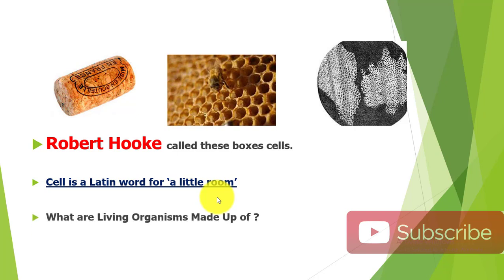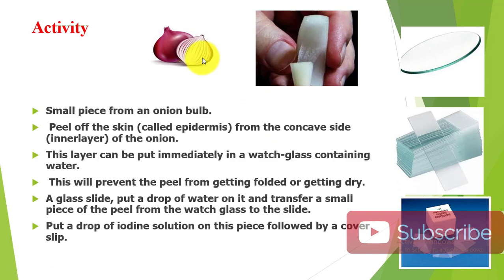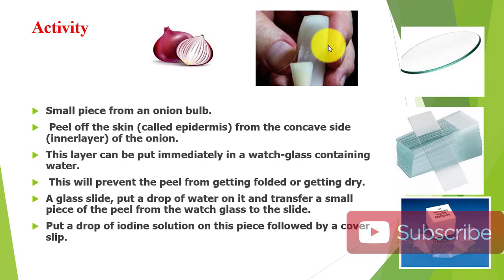Now, what are living organisms made up of? We will explore this with a small activity. Robert Hooke used a self-designed microscope, but today we have very good modern microscopes. The activity is simple: we take a small piece of onion bulb. On the inner concave side, there is a small peel of skin called the epidermis.